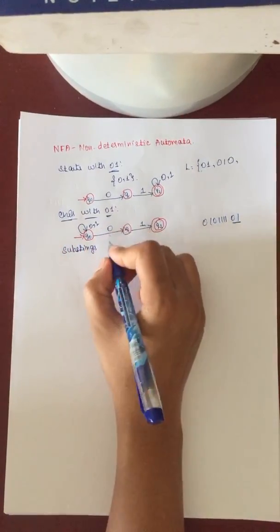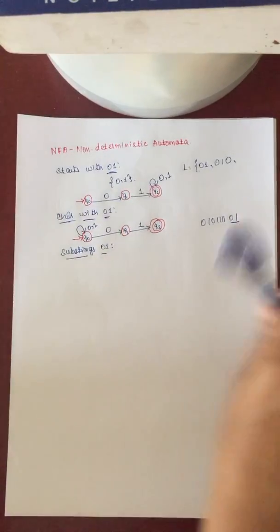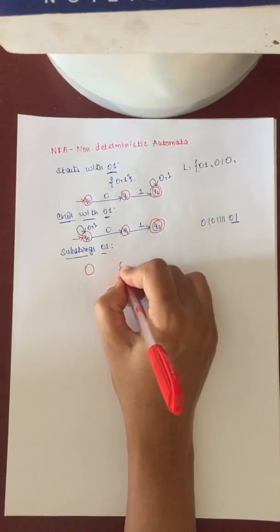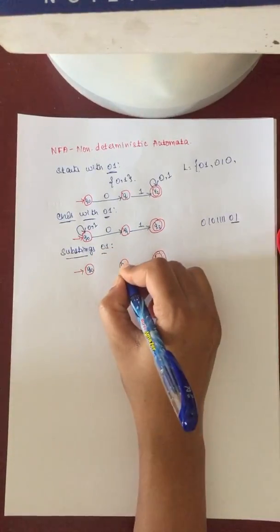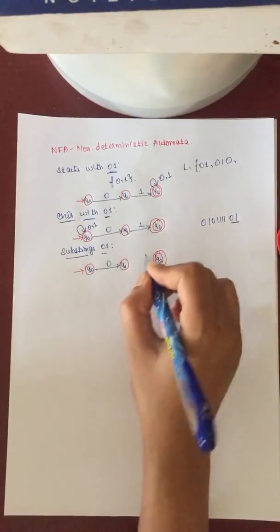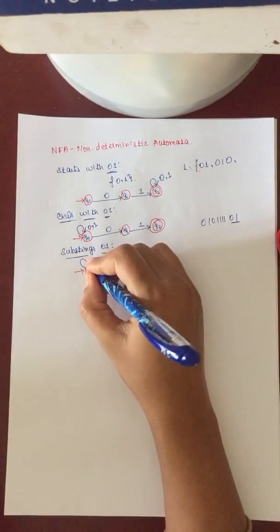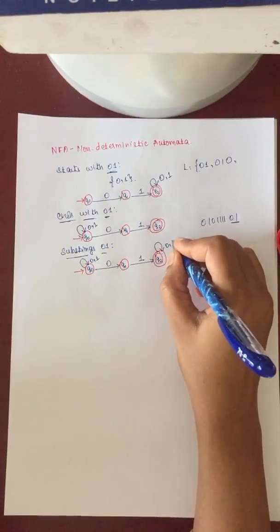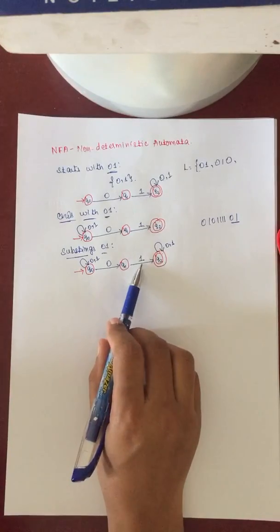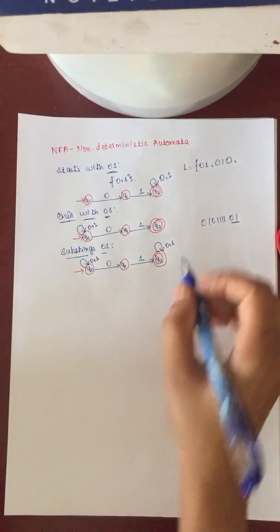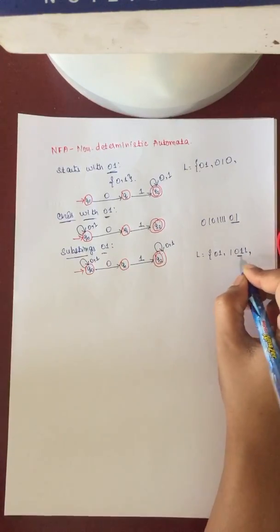The next example: design an NFA model which holds the substring 0, 1 in the string. It means there must be 0, 1 somewhere in the string. Again the given clue is 0 and 1. This is the initial state and this is the final state: Q0, Q1, and Q2. Substring must be 0, 1, meaning beginning and ending can be anything. So you can make a self-loop at Q0 with 0 and 1, and also a self-loop at Q2 with 0 and 1. Without reading the 0, 1 sequence, the model will not be able to reach the final state from the initial state.